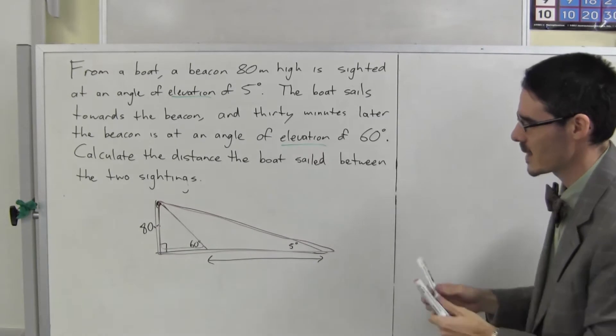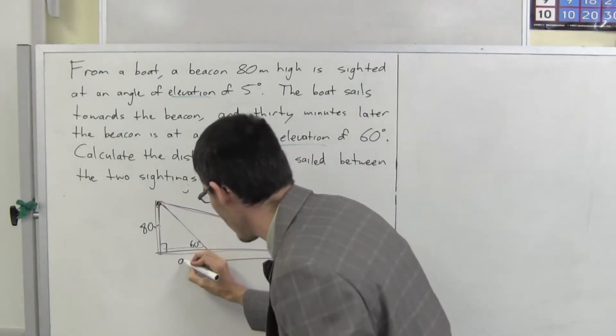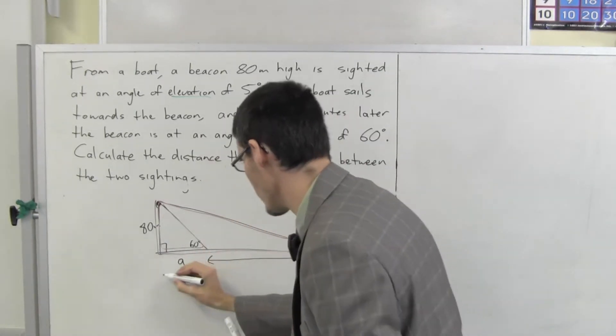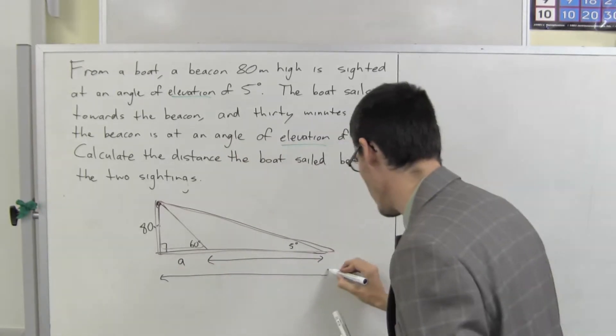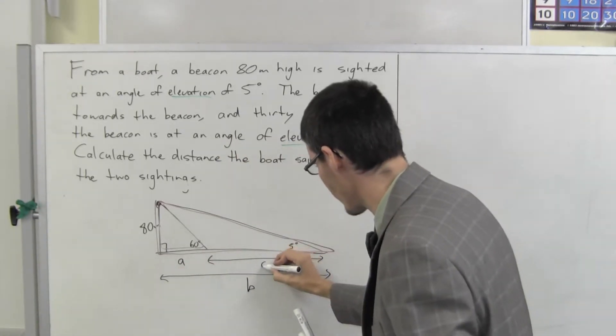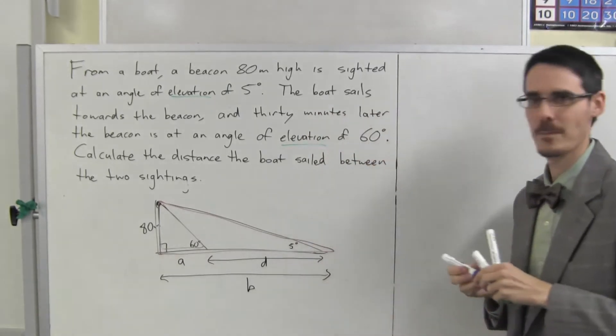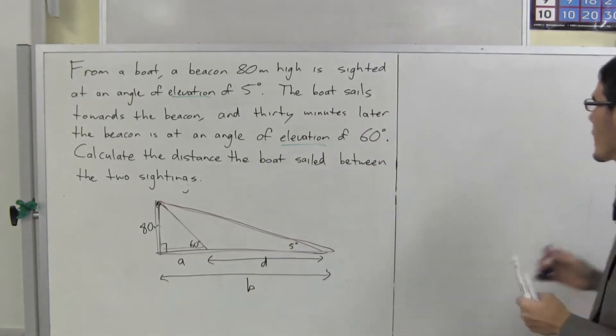Let's give these some names. Let's call that A. We'll call the whole length B. And the distance I want to find D. Let's try it.